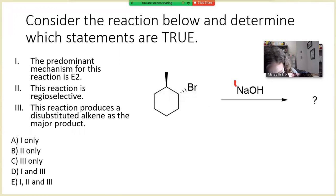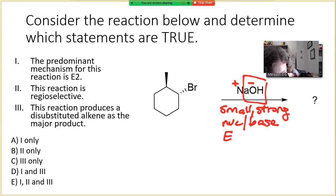First, we have sodium hydroxide. Sodium hydroxide is a small, strong nucleophile slash base. So right away, I can narrow my choices down to E2 and SN2 for this reaction, because we have a small, strong nucleophile slash base.